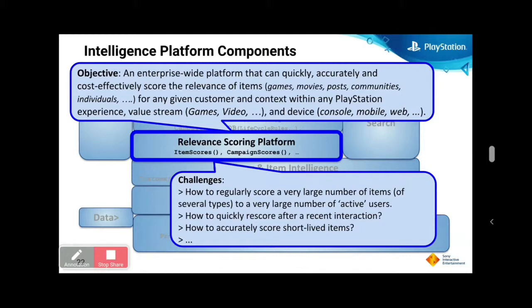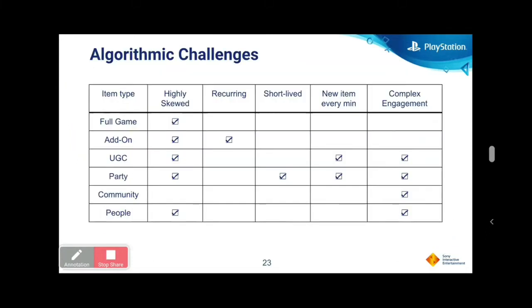All items need to be freshly scored across large numbers of items and users. Quick re-scoring is critical: if a user just bought a game, that impacts the next wave of predictions — we shouldn't be recommending more games when they've likely just spent their $70 and want to enjoy what they have. Technical challenges include dealing with highly skewed data, recurring or short-lived items that appear every minute, and items with complex engagement patterns.